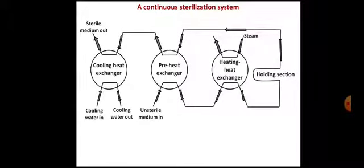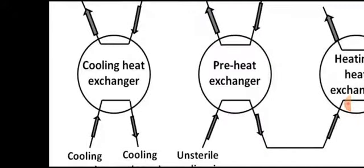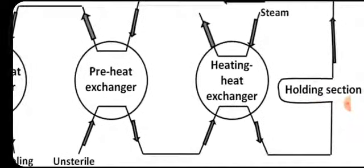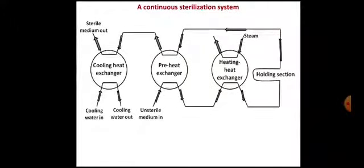This is the diagrammatic representation of the continuous sterilization system. The circles seen — cooling heat exchanger, preheat exchanger, and heating heat exchanger — are all of the double spiral type seen in the previous diagram. Unsterile medium enters from one end and first goes into the preheat exchanger, where its temperature is partially raised.